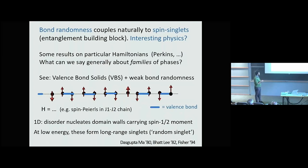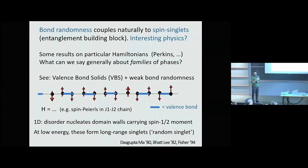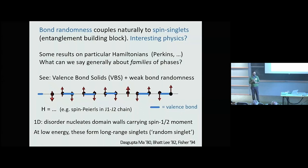In 1D this is well understood. If we have a spontaneously dimerized VBS phase in 1D — for instance from a J₁-J₂ model, leaving the Hamiltonian otherwise arbitrary within this phase — when you add weak bond randomness it couples to the domains. You get domain A, domain B, and domain walls. The domain wall must carry a spin-1/2, so there's an active degree of freedom: it's a Kramers doublet, which must do something at low energy. It starts out gapless, generates weak coupling to distant domain walls, and you end up with the random singlet phase in 1D.